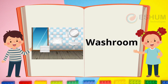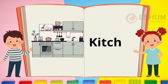Washroom. This is where you take a bath, wash your face, and brush your teeth. What do you see in the washroom in this picture? Kitchen. This is the place in the house where you cook. There are more things in the kitchen — what are they?